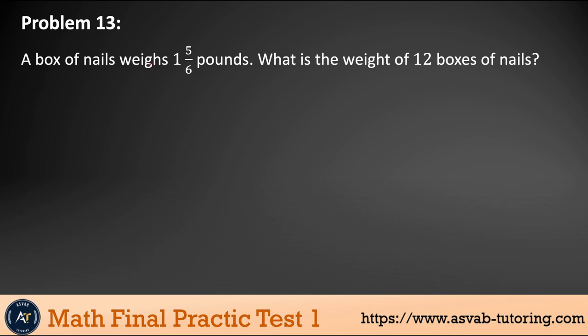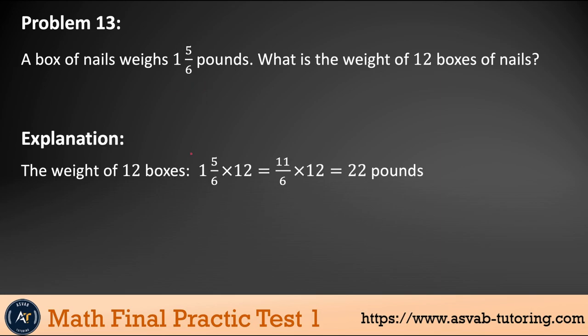Next problem. A box of nail weighs one and five over six pound. What is the total weight of 12 box of nails? So the purpose of doing that to refresh your the multiplication steps, right? So what do you have to do? You have to multiply that. So let's do that. So as I said, always, if you have a mixed number, always need to make this mixed number into improper fraction that we did here and multiply by 12. So when you multiply, multiply top to top, bottom to bottom, and then if you divide that, that gives you 22 pounds.